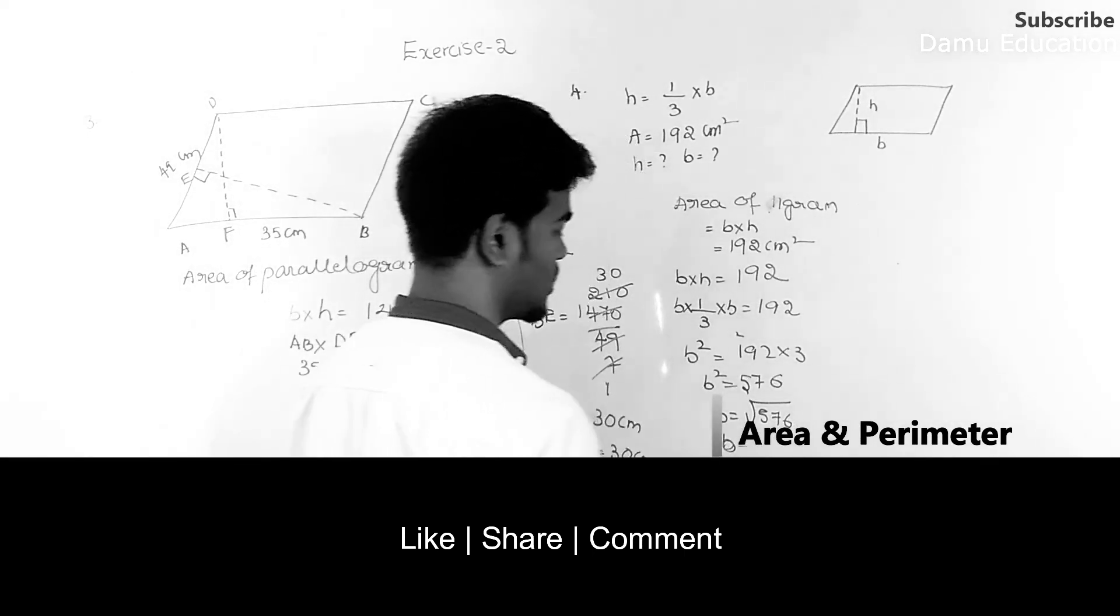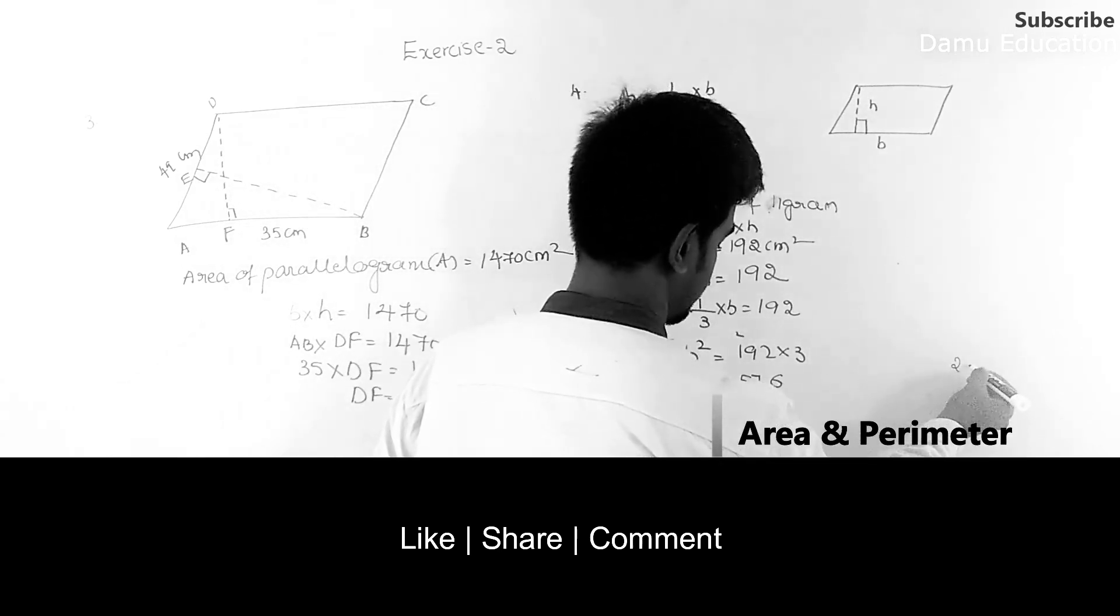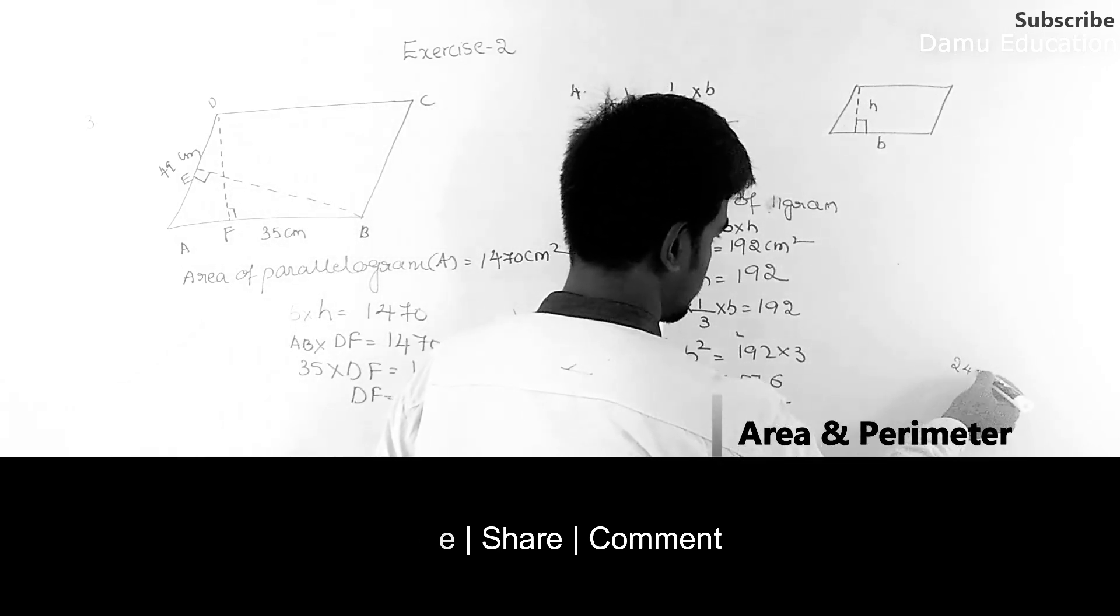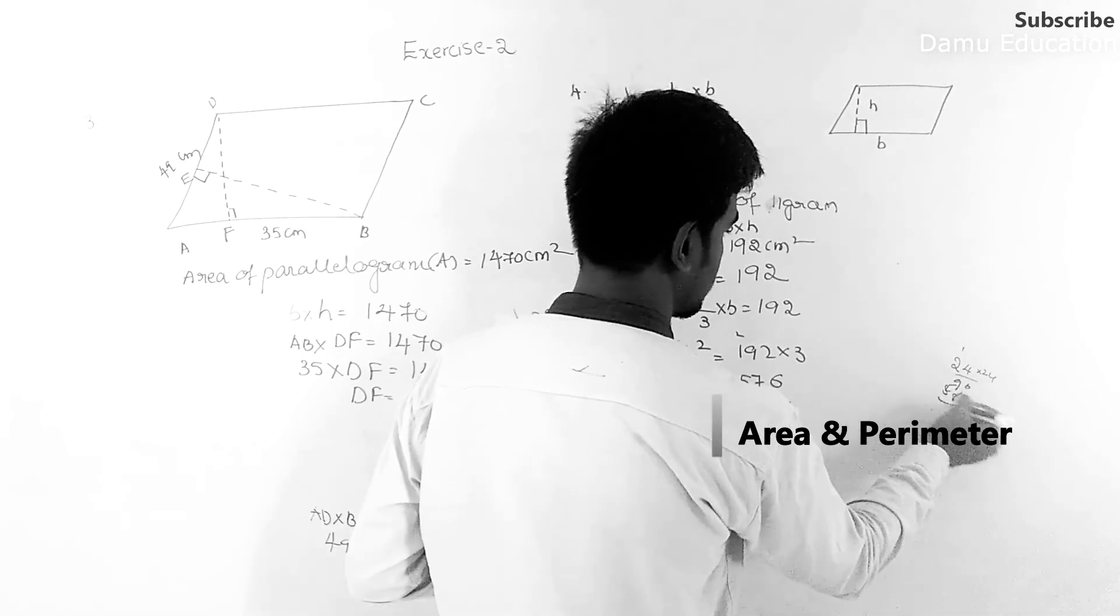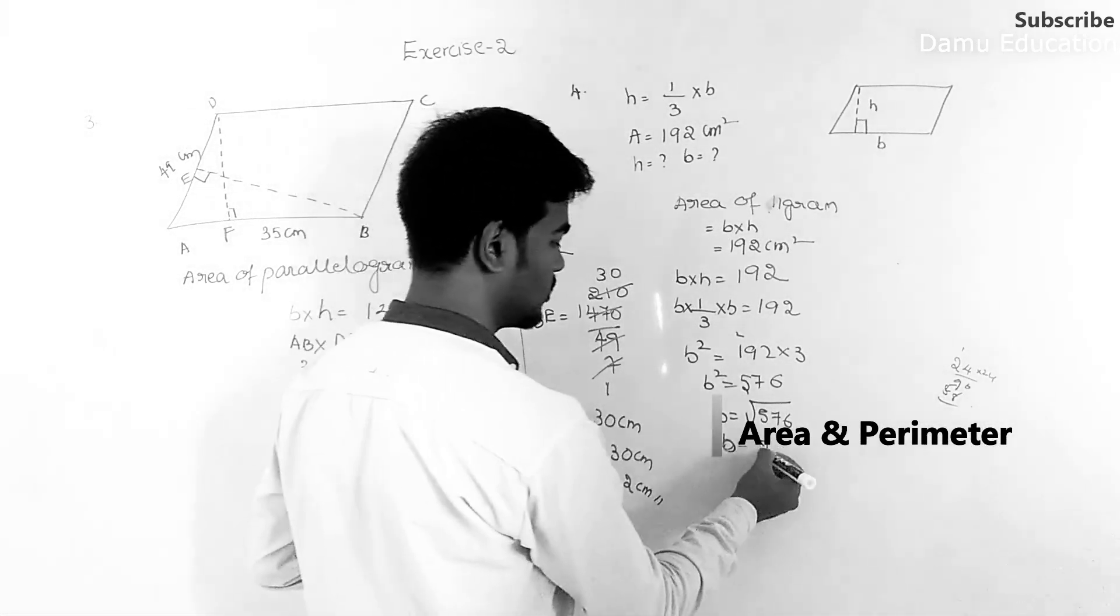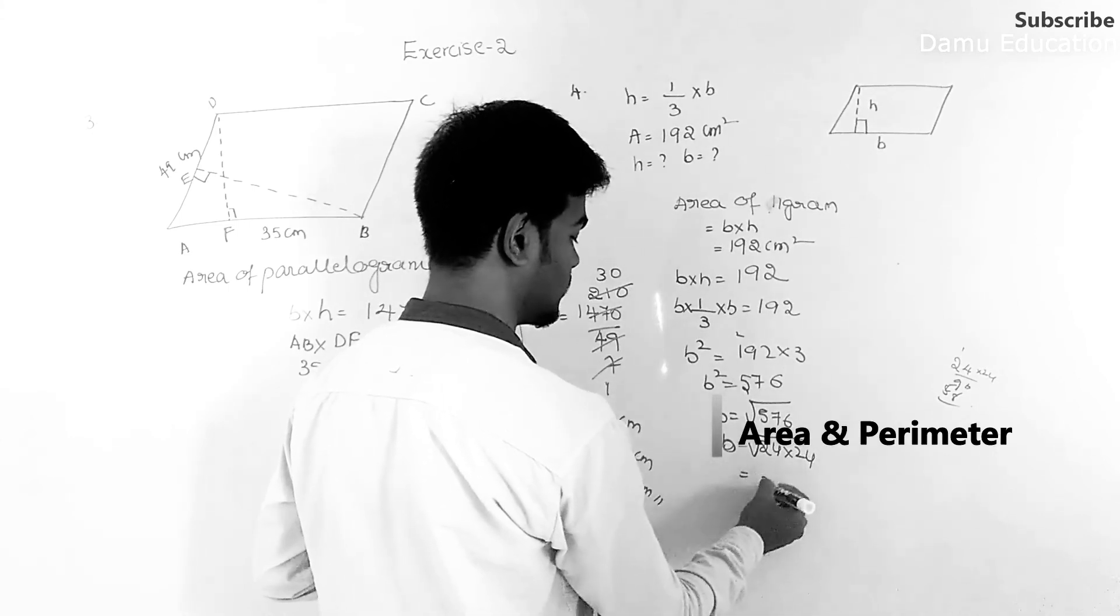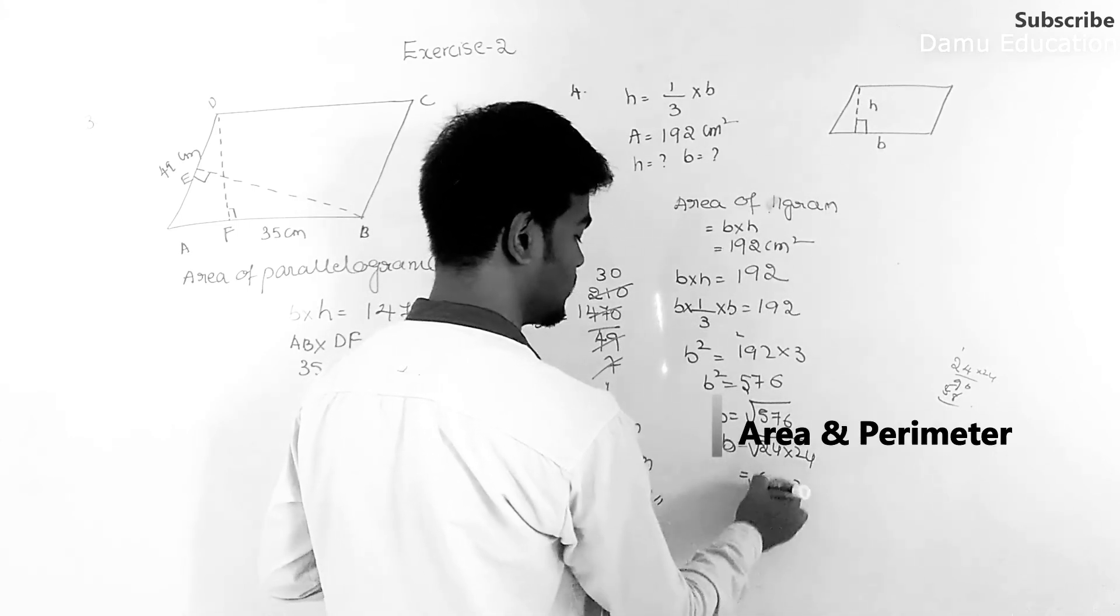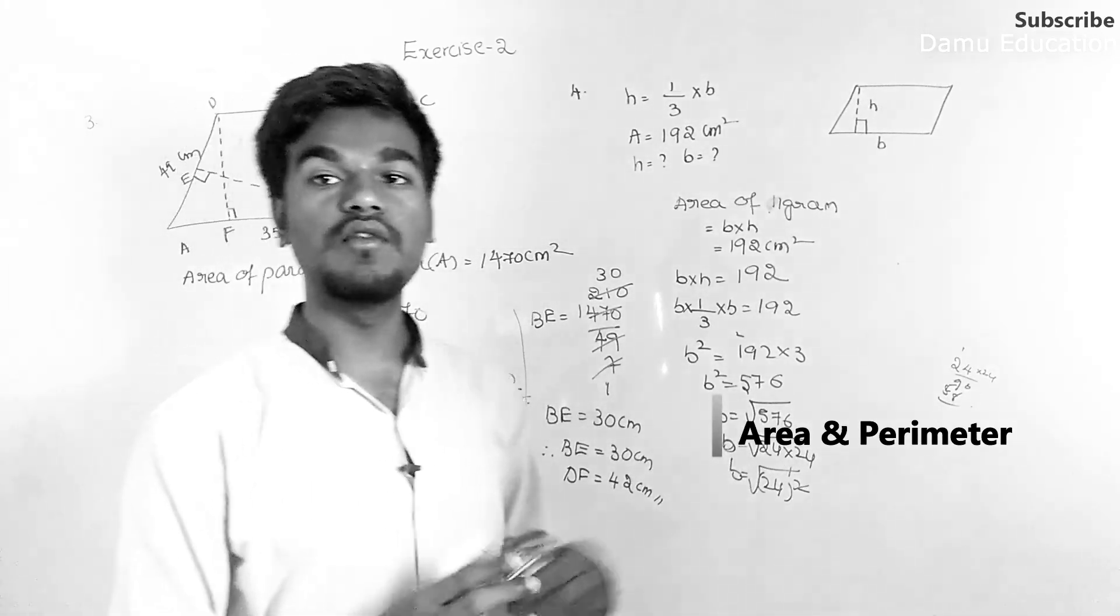So left side if it is a square, if you shift the square to the right side it will become square root. So B will be around 24. 24 into 24 you can write as 576, 24 whole squared. Square root, here square and square root will cancel.